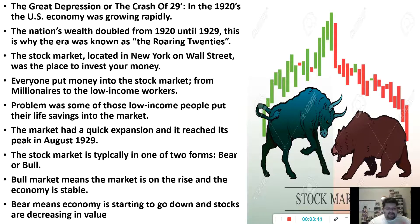Some people put their life savings into the stock market. Back in the 1920s, some people may have had $2,000 or $5,000 saved up and they put that into the stock market, figuring the economy is doing well, the stock market keeps rising, we'll make our money back and more. And it happened — the market kept growing and growing all the way through August 1929. But then it turned.